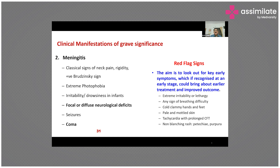There are certain red flag signs to look out for. If present, they indicate fast progression and severity of DIC. These key early symptoms, if recognized at the earliest stage, allow earlier treatment and improved outcomes. They include extreme irritability and lethargy, any signs of breathing difficulty, cold hands and feet, mottled skin, fast heart rate with prolonged capillary refill time, and non-blanching rash with petechiae and purpura. These are the red flag signs of meningococcal disease.